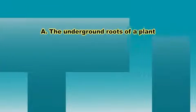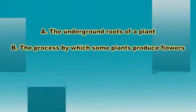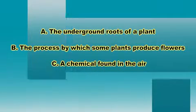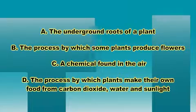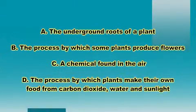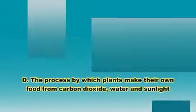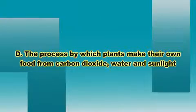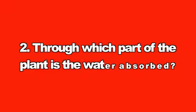You already know some of the basic facts of photosynthesis — ready to test what you know? Question one: what is photosynthesis? A) the underground roots of a plant, B) the process by which some plants produce flowers, C) a chemical found in the air, D) the process by which plants make their own food from carbon dioxide, water, and sunlight. The correct answer is D — photosynthesis is the process by which plants make their own food from carbon dioxide, water, and sunlight.